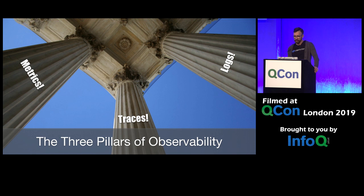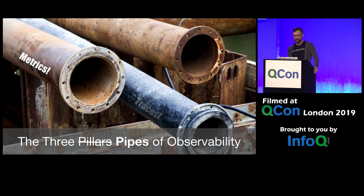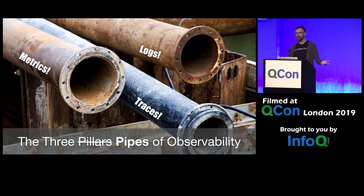These three pillars — I do think they have value, I'm not saying we should throw them out. But to me it's more like they're the three pipes of observability. They've got things in them that we want, and we need to build something out of it. That's very different from saying I've got traces, so I'm done with that pillar, let's check off the other two. Not a good solution.